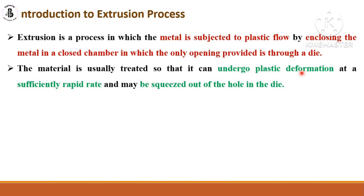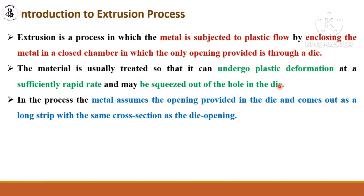Extrusion can be considered as a plastic deformation of metallic materials at a sufficiently rapid rate, and it is used to squeeze material out through the hole in the die. The shape and complexity of the job determines the die material you select. In the process, the metal assumes the shape of the die opening and comes out as a long strip with the same cross-sectional area as the die opening.